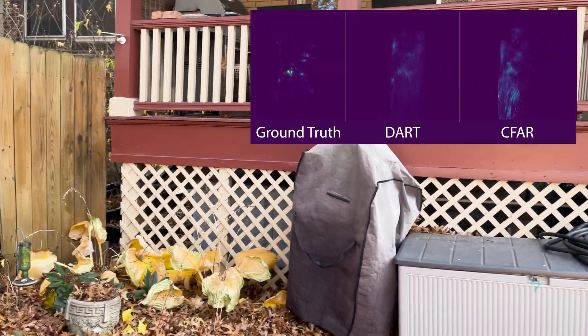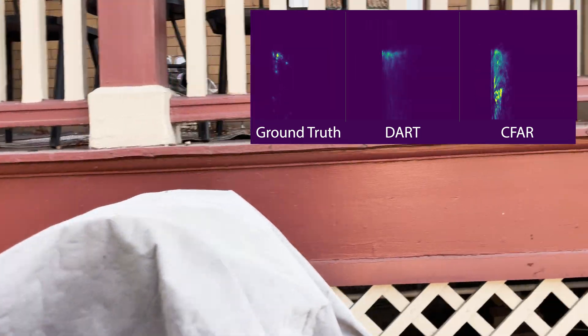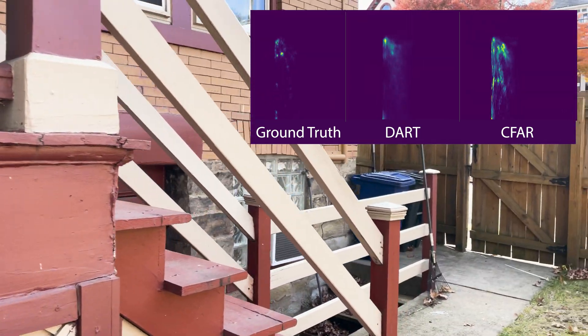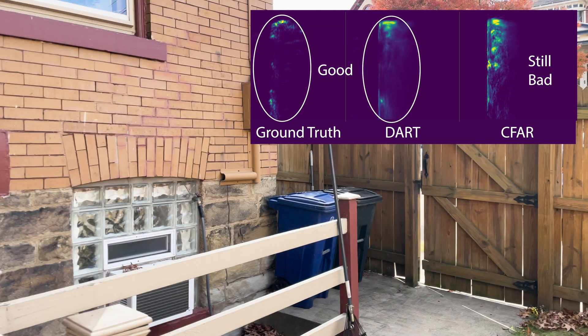DART creates more accurate radar simulations compared to existing baselines by using an implicit neural scene representation rather than an explicit point cloud. While traditional radar processing methods struggle with occlusion and clutter, DART can model complex scenes by learning both reflectance and transmittance in a view-dependent way.